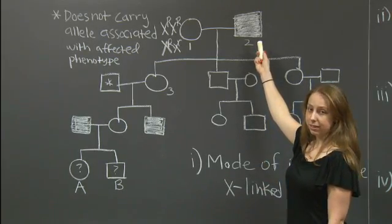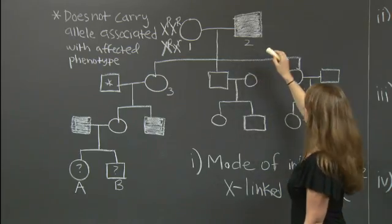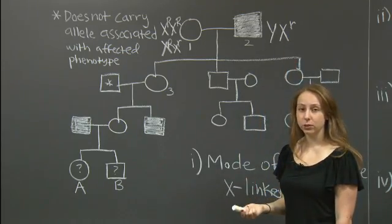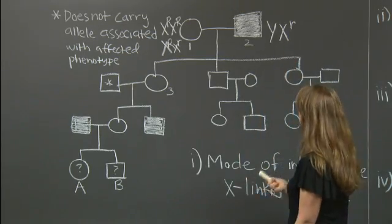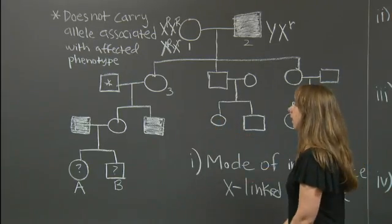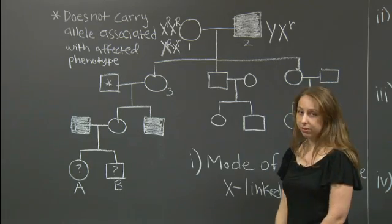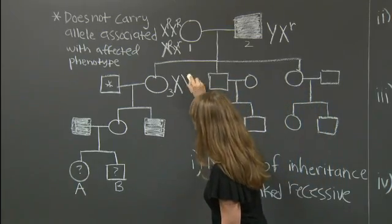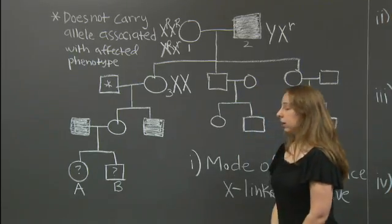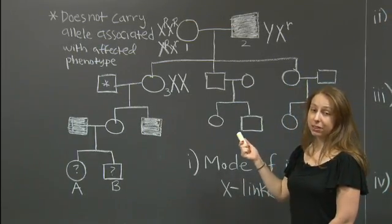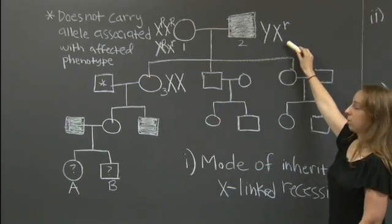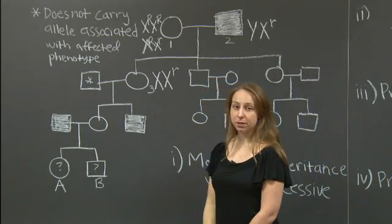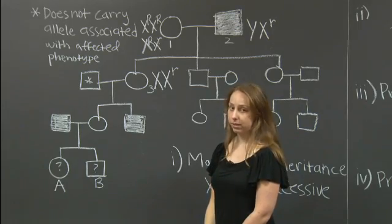This male right here is affected by the disease, so he must have an X with a small r. Remember that males have one X chromosome and one Y chromosome. Now, making our way down to individual number three — individual three does not have the disease and is female, so she must have two X chromosomes. One of the X chromosomes must come from her father and the other from her mother. The only X chromosome her father can pass along to her is the X small r. In order for her to not be affected, her other X chromosome must have a large R.